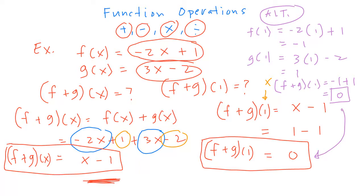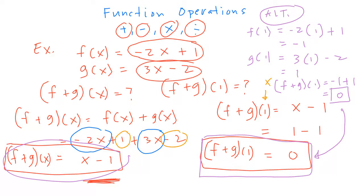Either method works, but since we already have f plus g of x, we can just plug in the value x = 1 directly — that's the first solution. The alternate gives the same result. Now we're done with addition, so let's move on to subtraction, which is similar to subtracting algebraic expressions.